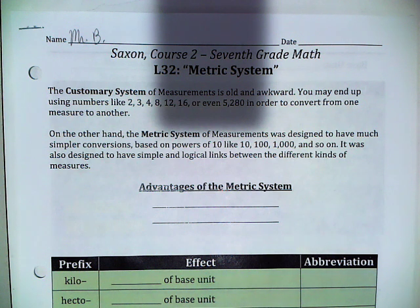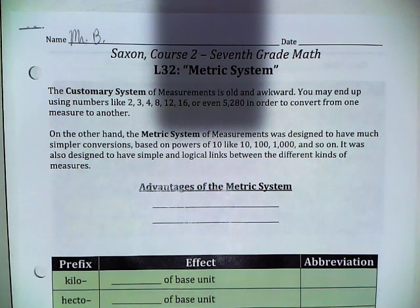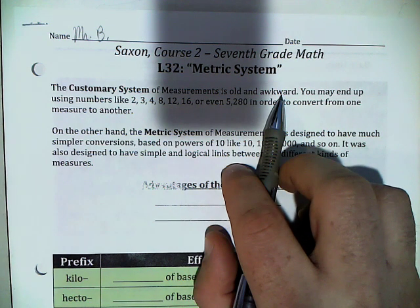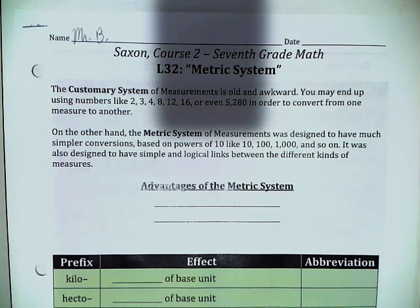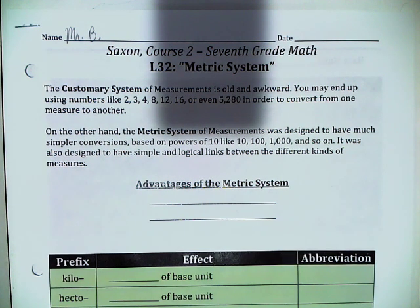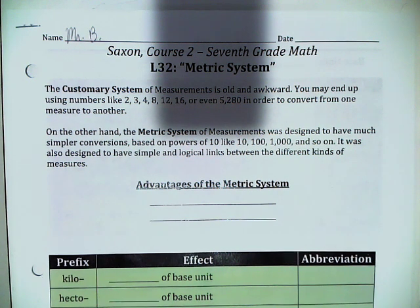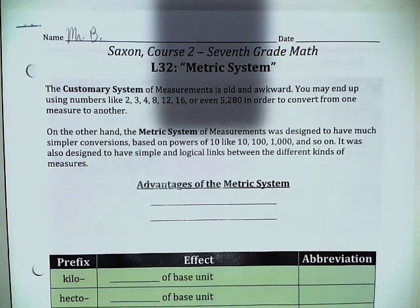Before we get into the metric system, the system that we primarily use here in the United States is called the customary system or U.S. customary system. If I'm fair, while I personally like it just because I find the numbers interesting, it's old and it's awkward. Most of the world has abandoned it. When I was growing up, it was called the English customary system, but the English have abandoned it. Now it's called the U.S. customary system since we are one of the last countries in the world to continue to use it.